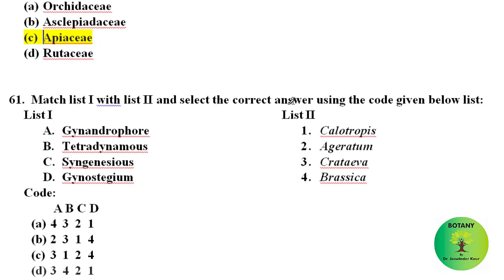Match list 1 with list 2: Gynandrophore is present in Crateva — when both gynoecium and androphore are present together it is called gynandrophore. Tetradynamous condition — two short and four long stamens — is present in Brassica. Syngenesious condition, where anthers are fused but filaments are free, is present in family Asteraceae, genus Ageratum. Gynostegium — a complex structure formed by fusion of stamens, styles, and stigmatic surface — is present in Calotropis. The correct option is option D.